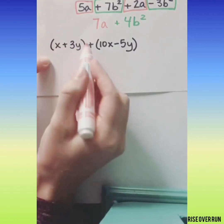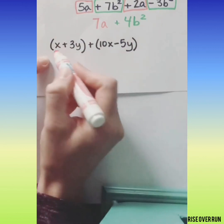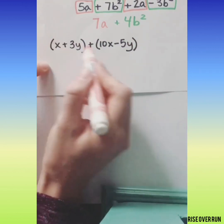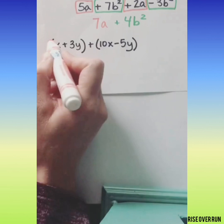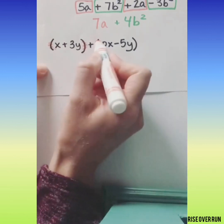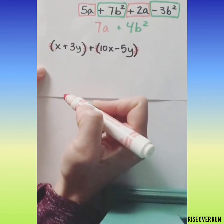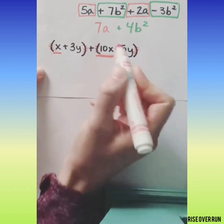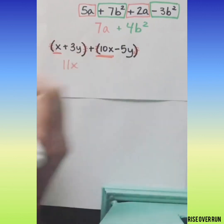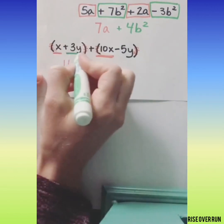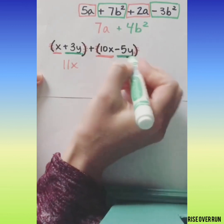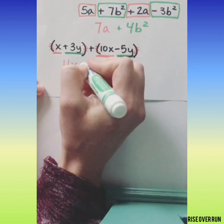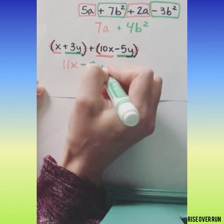Sometimes you'll see parentheses when you're trying to simplify. If there's nothing to multiply outside these parentheses, you can kind of ignore them. Now let's look for like terms. We've got x and a positive 10x together. That makes 11x and then we have positive 3y and negative 5y. So that will combine to make negative 2y.